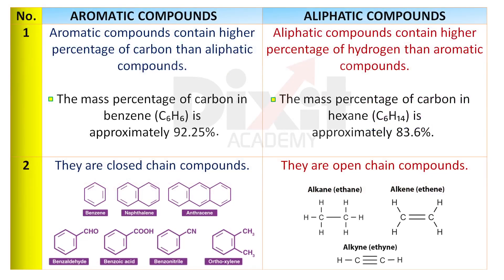Distinguishing between aromatic and aliphatic compounds. Point 1: Aromatic compounds contain a higher percentage of carbon than aliphatic compounds. Example: the mass percentage of carbon in benzene is approximately 92.25%. Aliphatic compounds contain a higher percentage of hydrogen than aromatic compounds. Example: the mass percentage of carbon in hexane is approximately 83.6%.